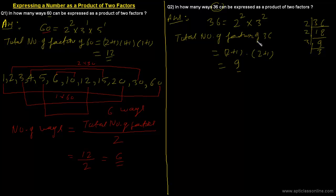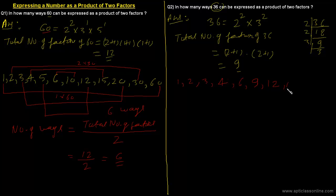To find the number of ways 36 can be written as a product of two factors, we would divide 9 by 2, but that gives 4.5, which cannot be the answer. Before finding the formula, let's list all factors of 36: 1, 2, 3, 4, 6, 9, 12, 18, and 36 — these are the 9 factors.